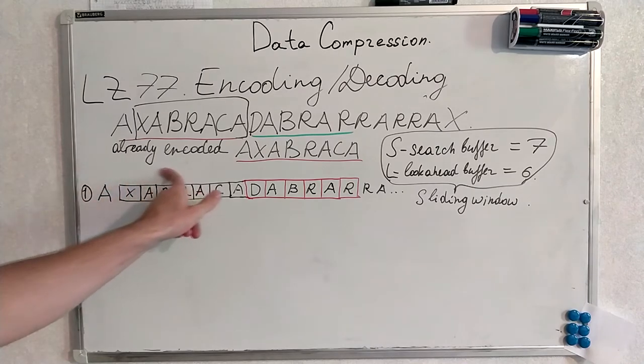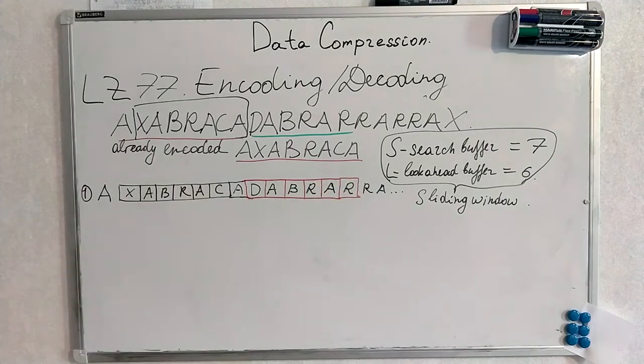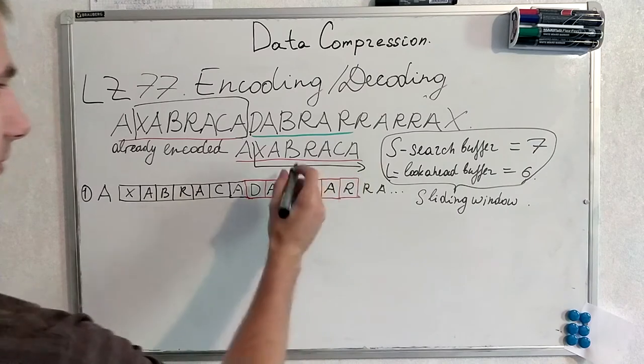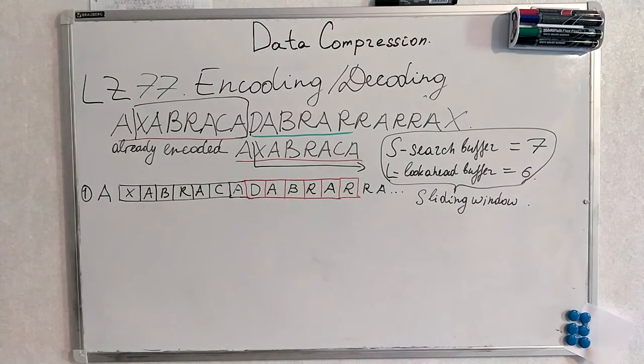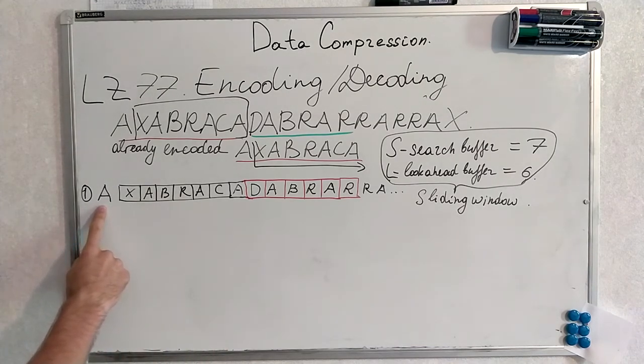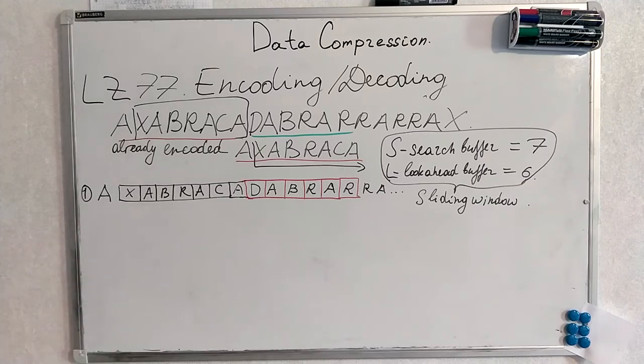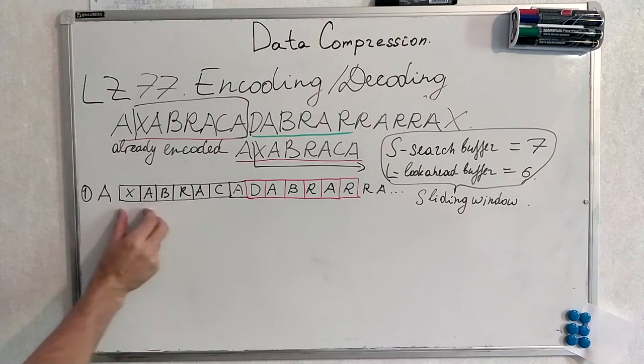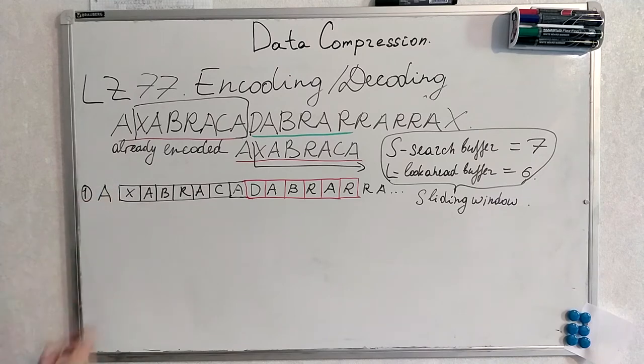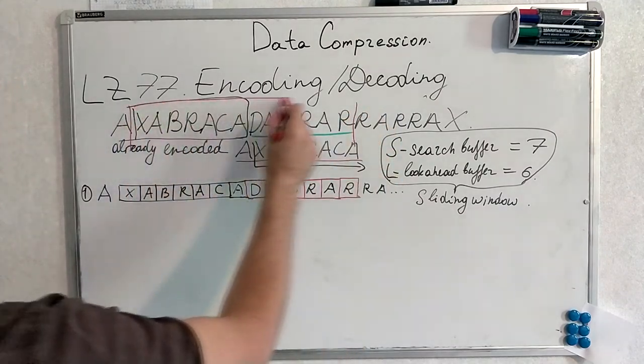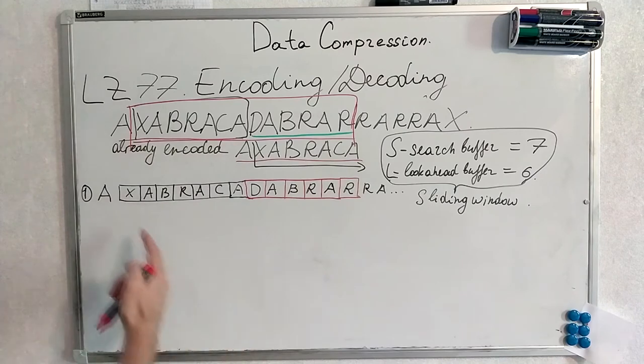Here we have already encoded Xabraca. We know that search buffer is seven symbols long. Thus we use Xabraca inside our search buffer because it is seven symbols. If you look at the whole word I have written here, A is hanging out somewhere here. We have already encoded it. But we have encoded a sequence longer than our search buffer. Thus search buffer has moved a little bit to the right and we are currently in this interval. So this is our sliding window. This is our sliding window. And I have written it here as you see.